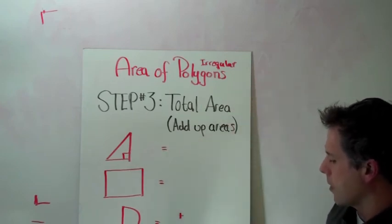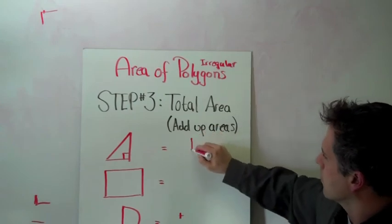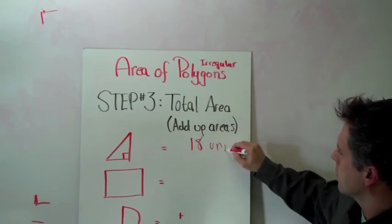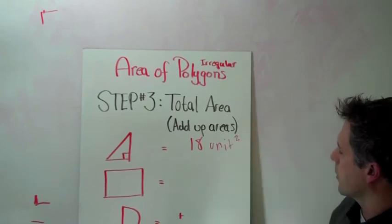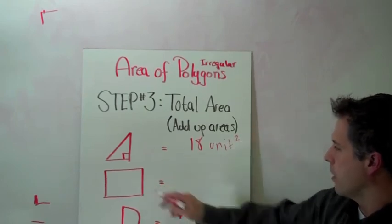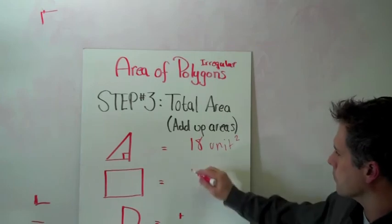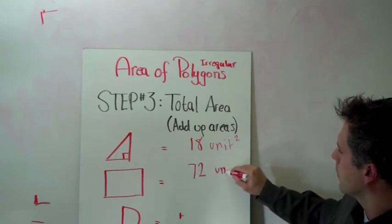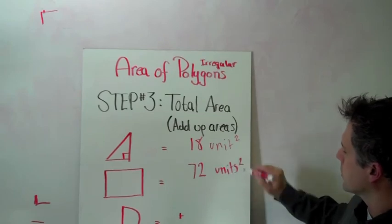So the area of our triangle was 18 units squared. The area of our rectangle was 72 units squared.